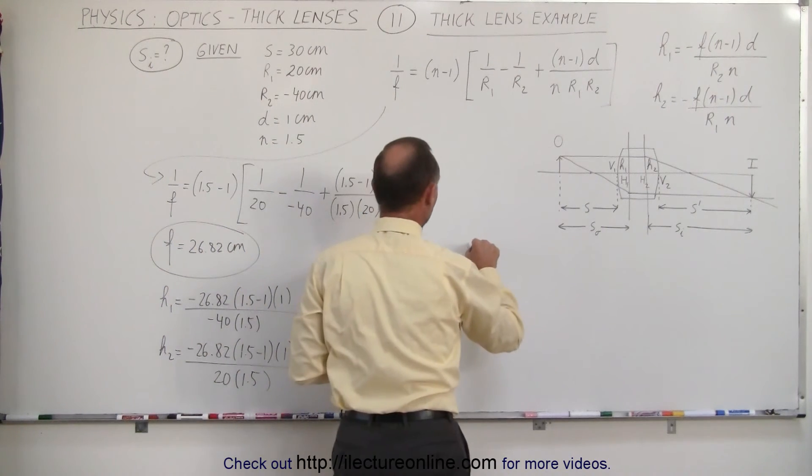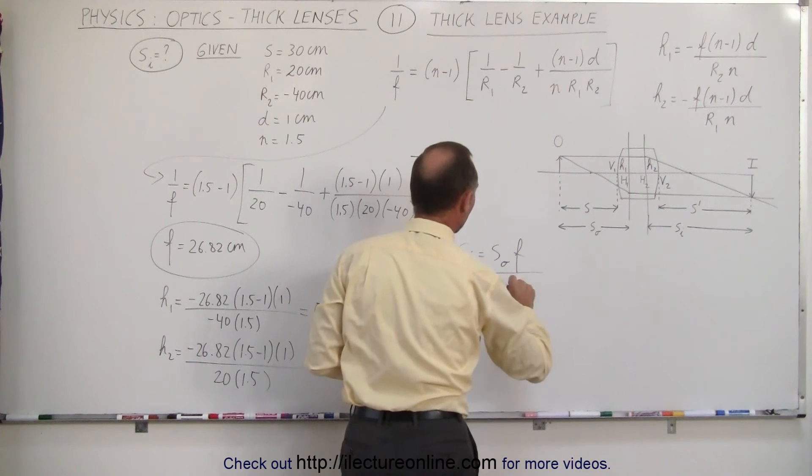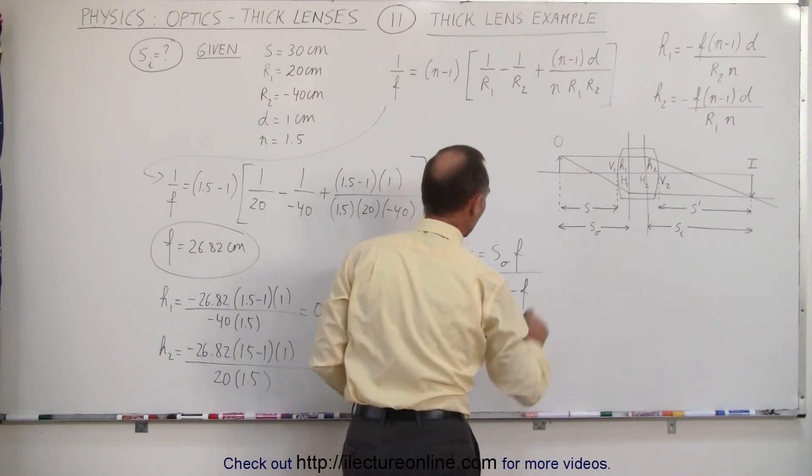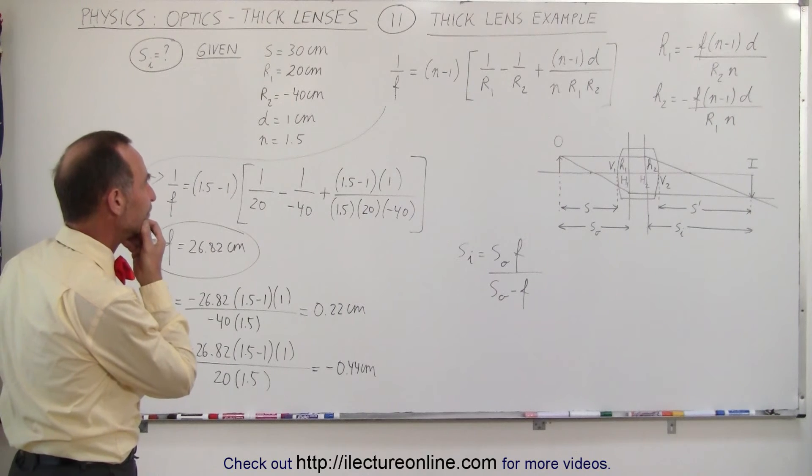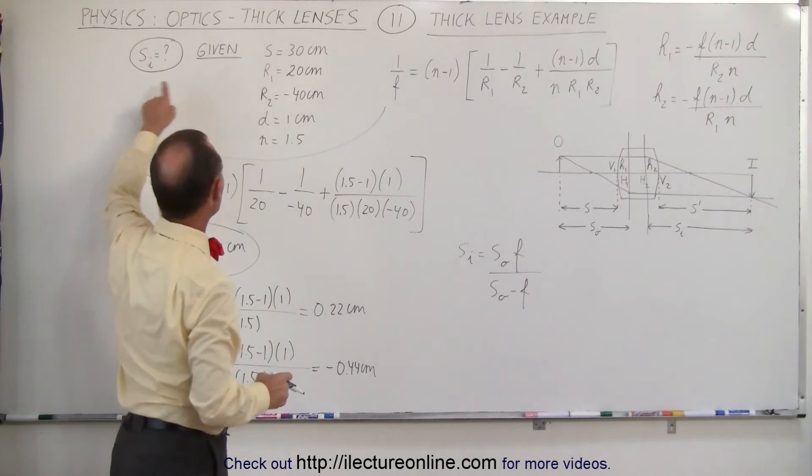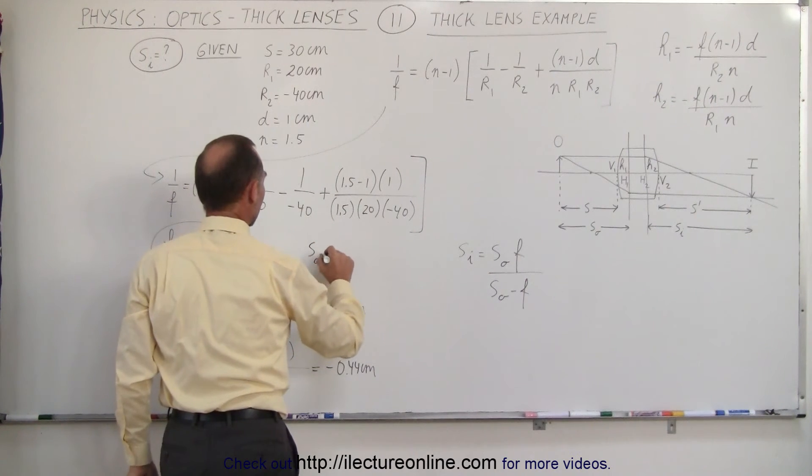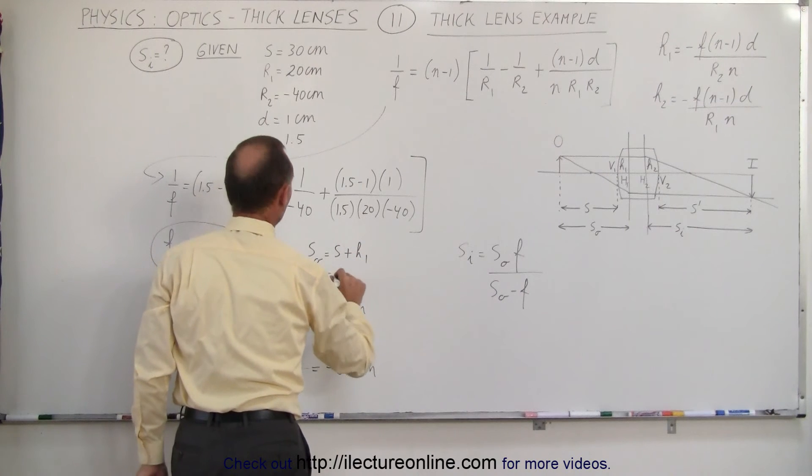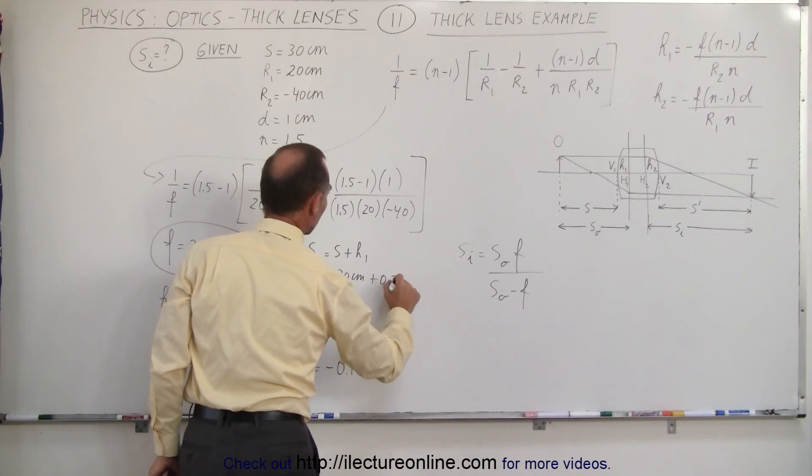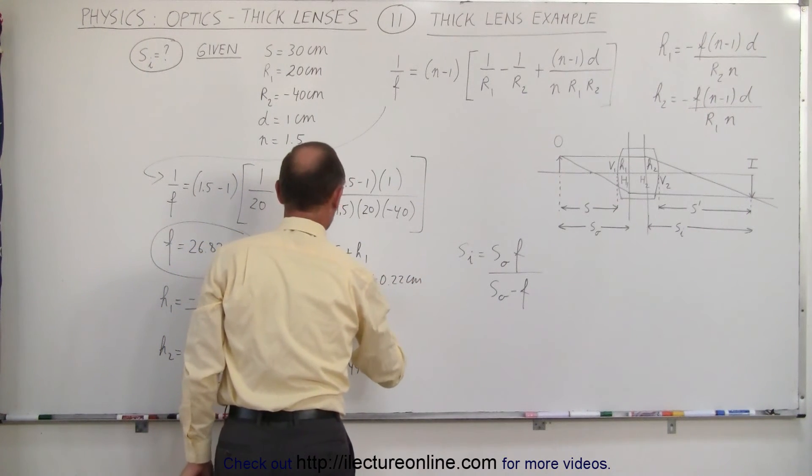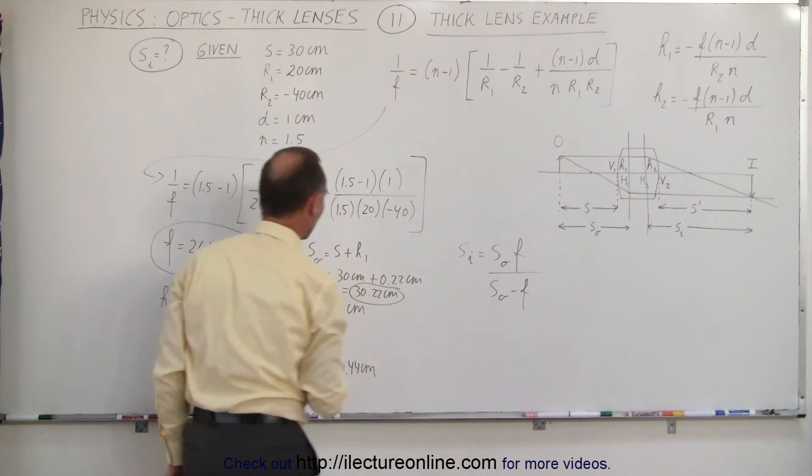Know that s sub i is equal to s sub o times the focal length divided by s sub o minus the focal length. Now notice we have, what do we have so far? Well we have s, but we don't have s sub o. We can find s sub o by taking s sub o is equal to s plus h1, and so that is equal to 30 centimeters, plus h1, which is 0.22 centimeters, which means that this is equal to 30.22 centimeters.